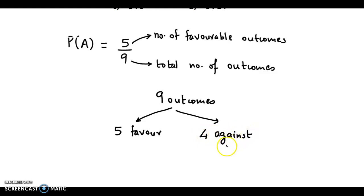We have been asked the odds against ratio. So therefore, the odds against ratio of event A is: against is 4 outcomes, so we write 4 is to. In favor there are 5 outcomes. So the odds against ratio is 4 is to 5.